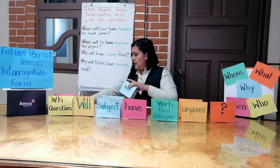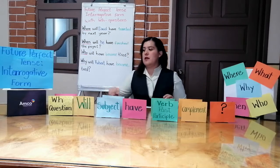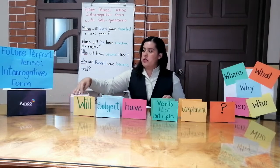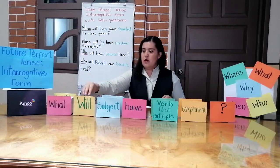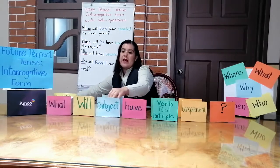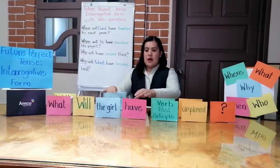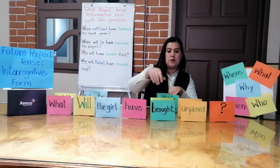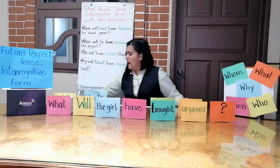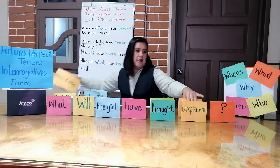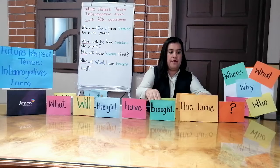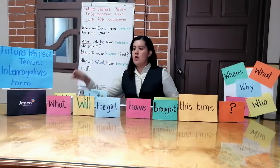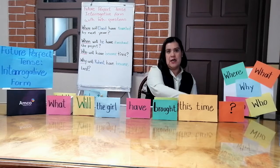Now, look at the example. The WH question we are going to use is 'what', followed by 'will', the subject is 'that girl', then 'have', the verb in past participle 'brought', and the complement is 'this time'. So we have: What will the girl have brought this time?